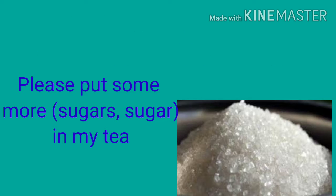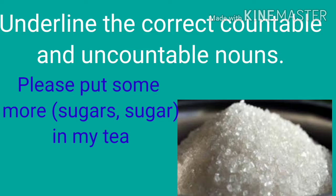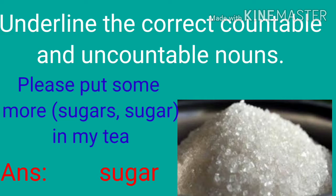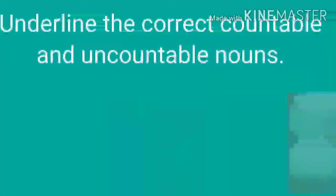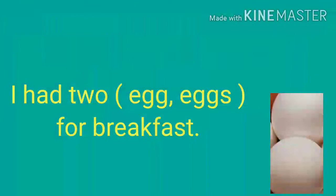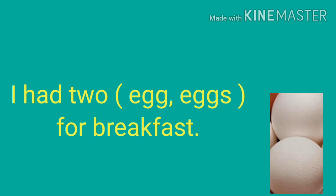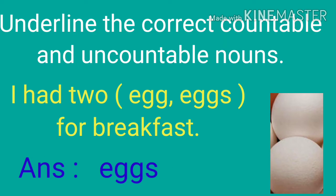Sugar is an uncountable noun, so the correct answer is sugar: 'Please put some more sugar in my tea.' Next: 'I had two egg or eggs for breakfast?' Eggs are countable nouns — we can count one, two, three, four eggs. So the correct answer is eggs: 'I had two eggs for breakfast.' Egg is a countable noun.